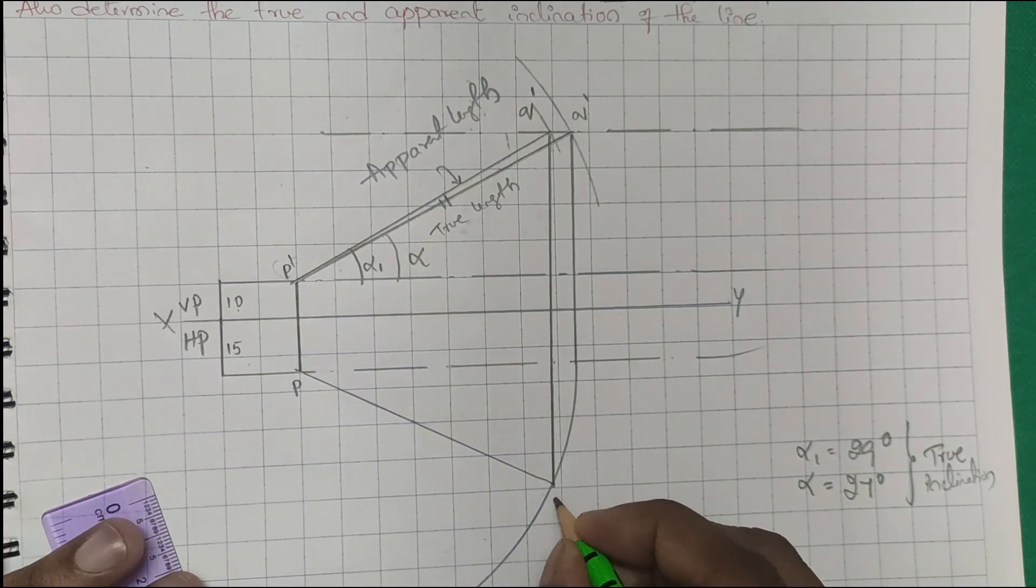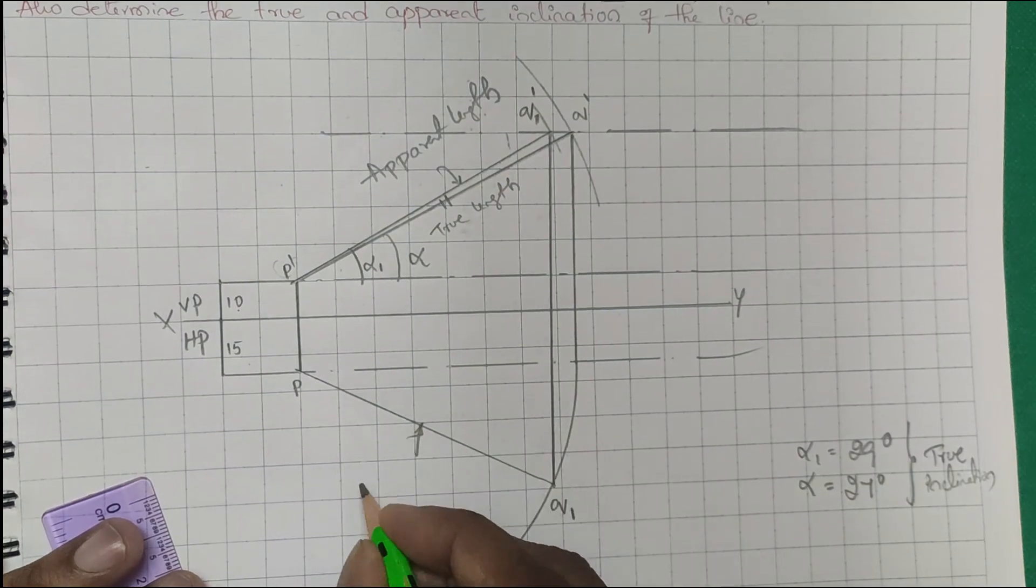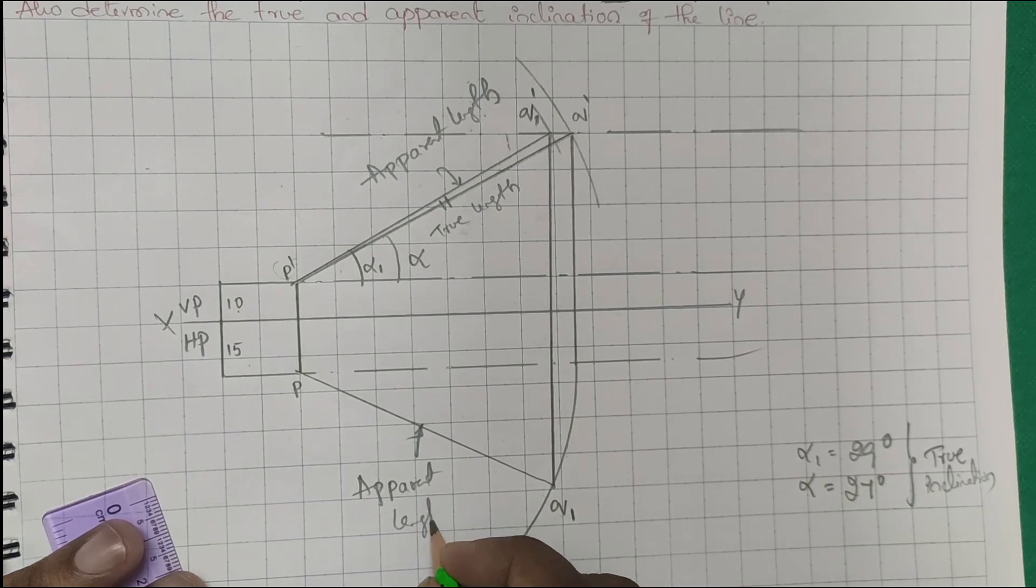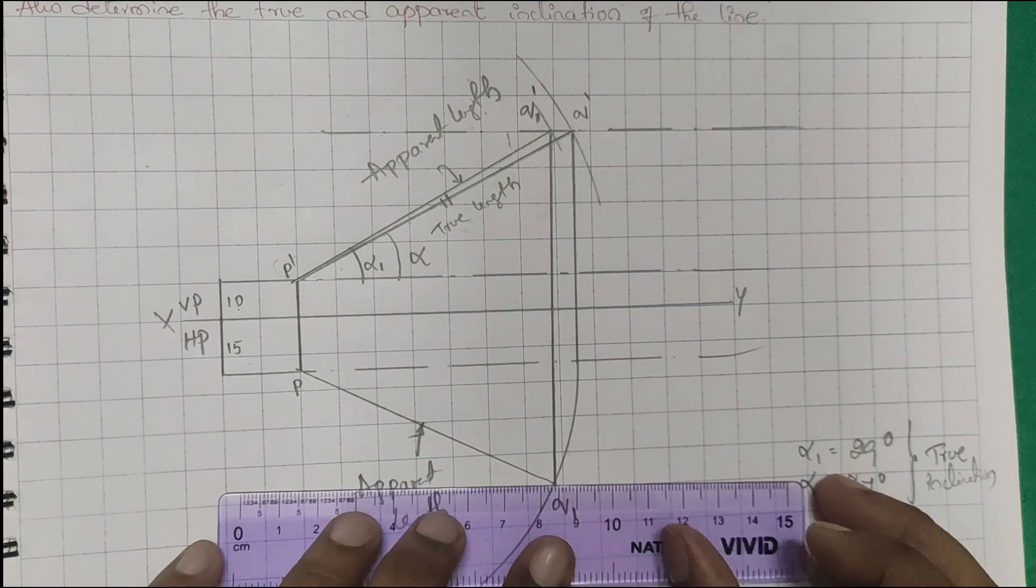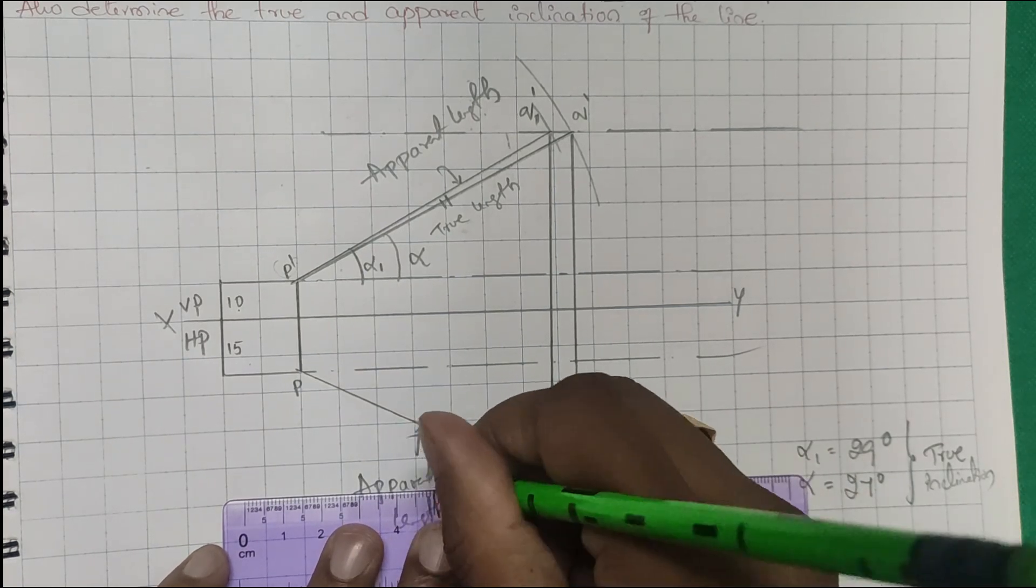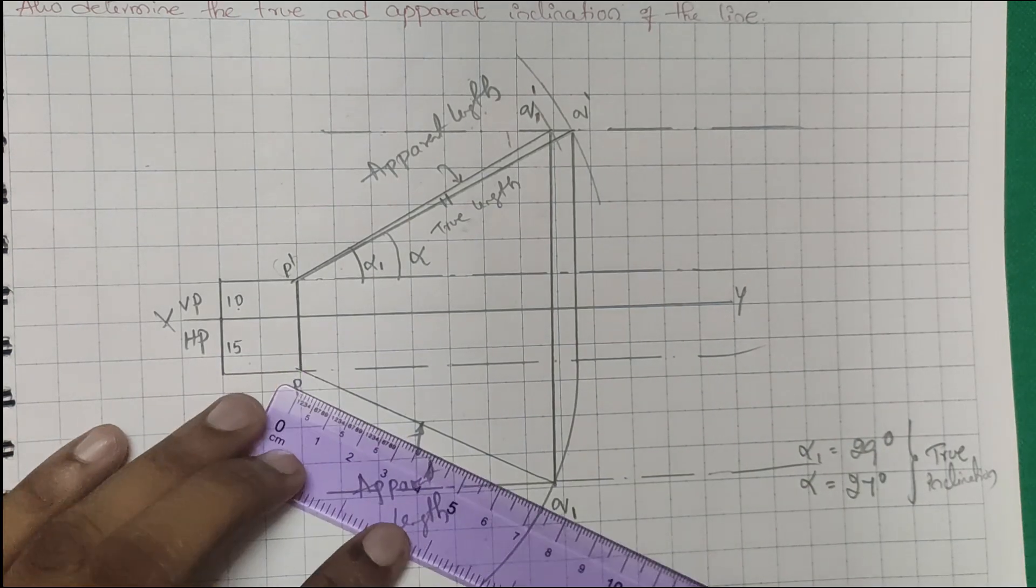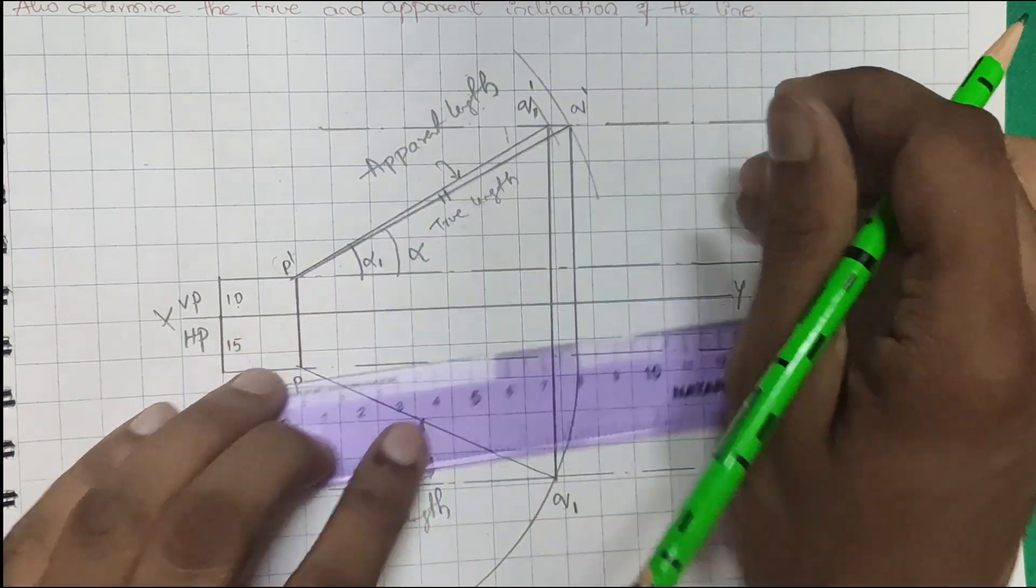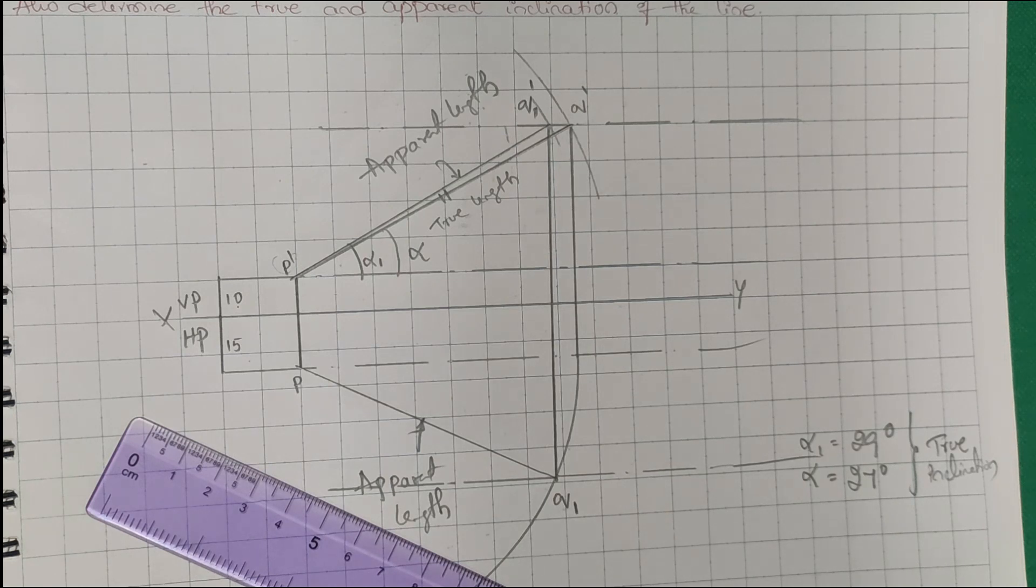This is your Q1, which is the apparent length. Now how to get the true length here? You can see the apparent length is 75mm and this apparent length is 80mm.